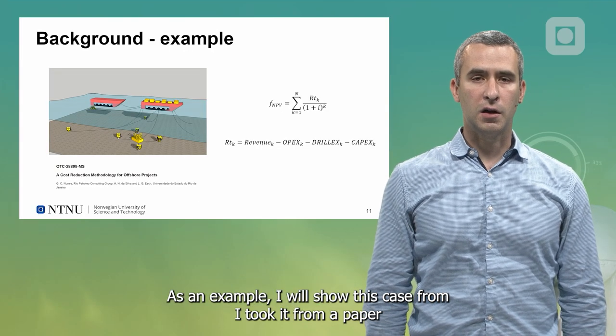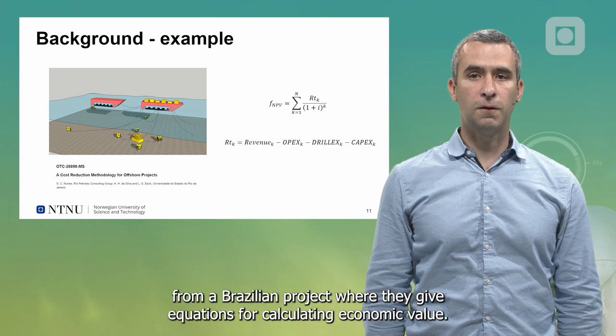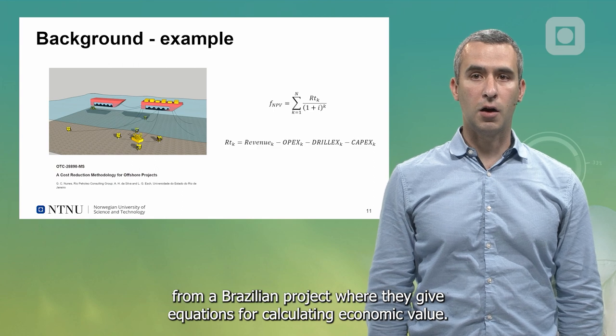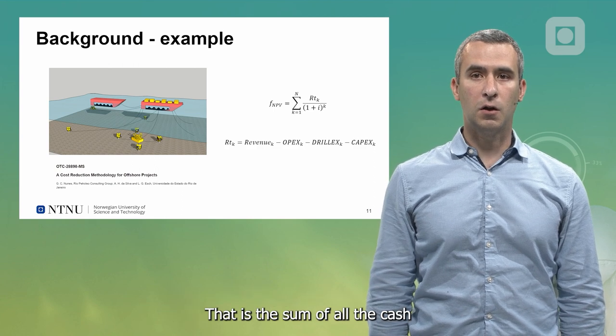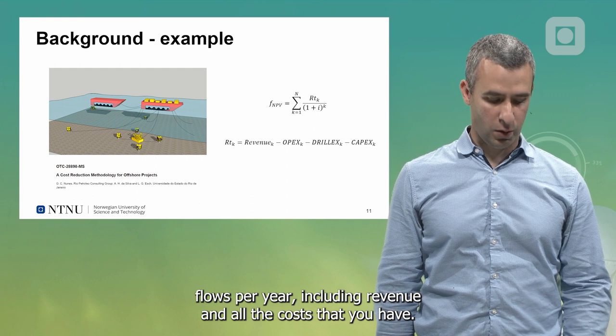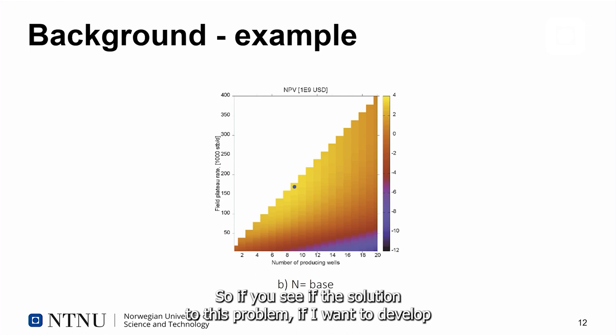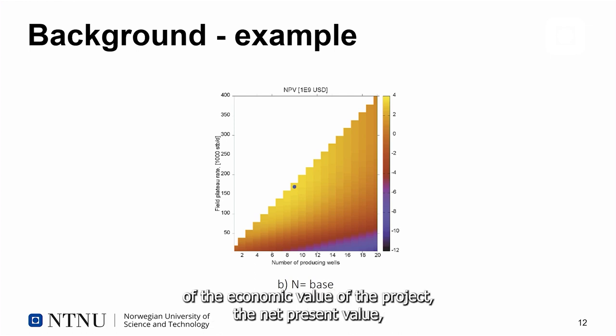As an example, I will show this case from a paper from a Brazilian project where they give equations for calculating economic value, that is the sum of all the cash flows per year, including revenue and all the costs. If you see the solution to this problem, if I want to develop this field in an optimal manner, assuming no uncertainty, this plot gives you a color chart of the economic value of the project, the net present value.